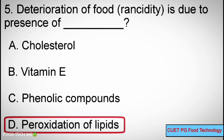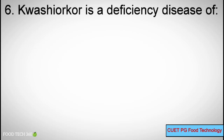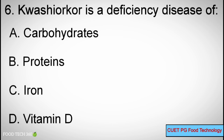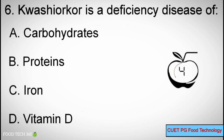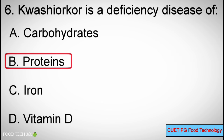Question number 6. Kwashiorkor is a deficiency disease of — Options: A. Carbohydrates, B. Proteins, C. Iron, D. Vitamin D. Correct answer: B. Proteins.